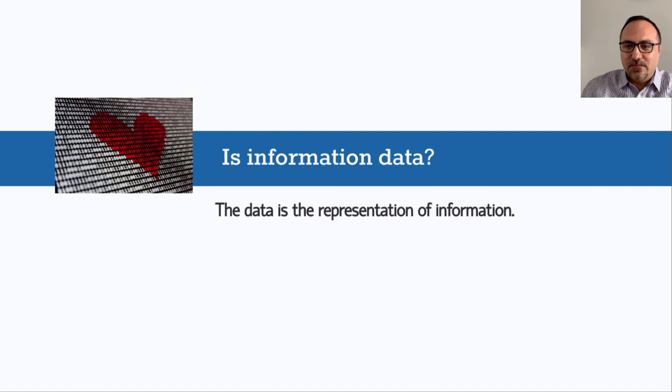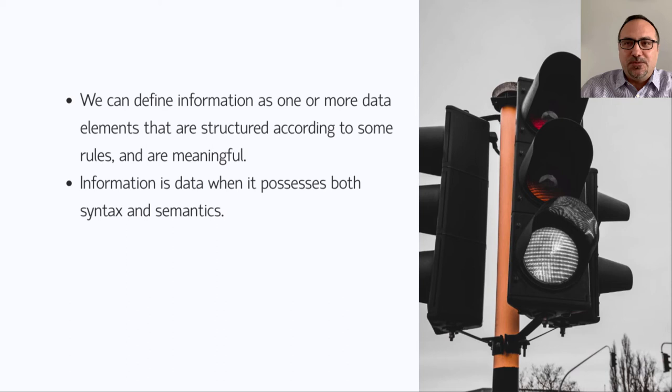For instance, imagine that you are approaching a traffic light. Your observation of a red signal is data because it could have been otherwise—yellow or green. We can define information as one or more data elements that are structured according to rules and are meaningful. Information is data when it possesses both syntax and semantics. Therefore, the data that is observed as the red traffic signal becomes information because the red light means that you must stop at the traffic light. If you do not associate this action with the red light, your observation remains only as data.